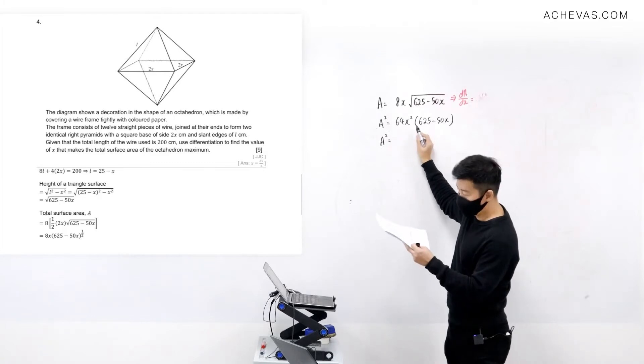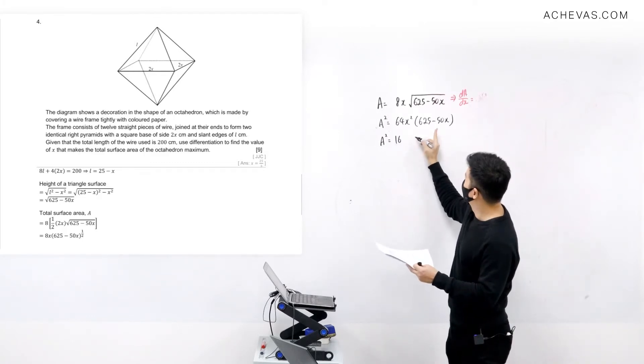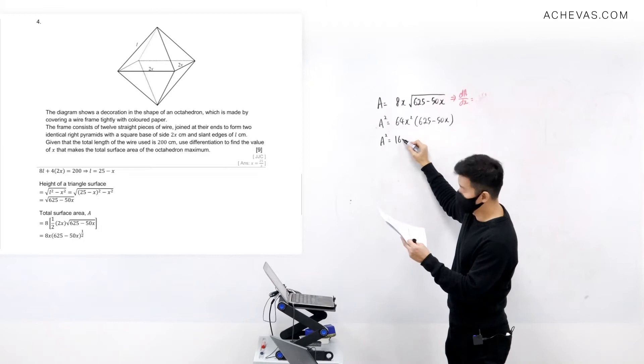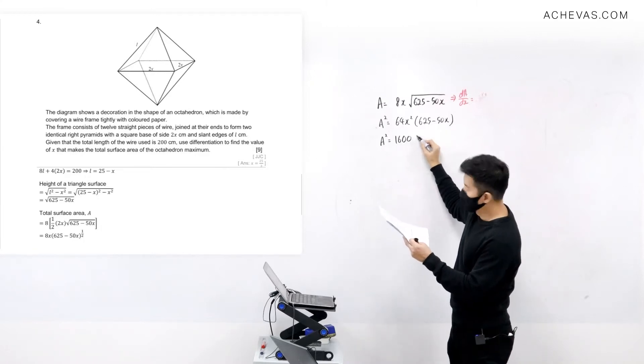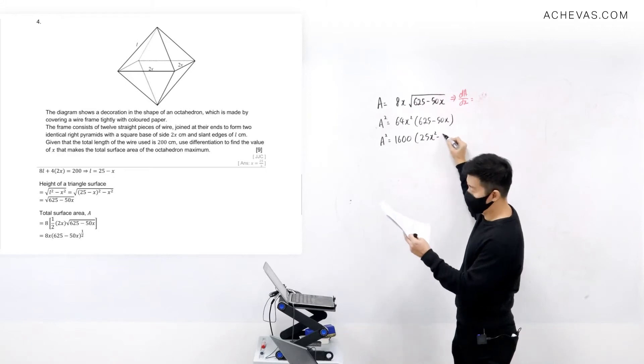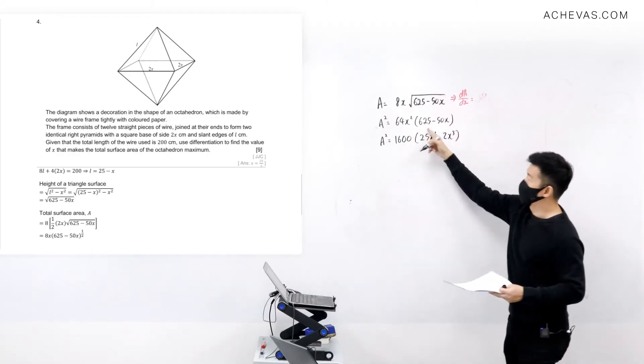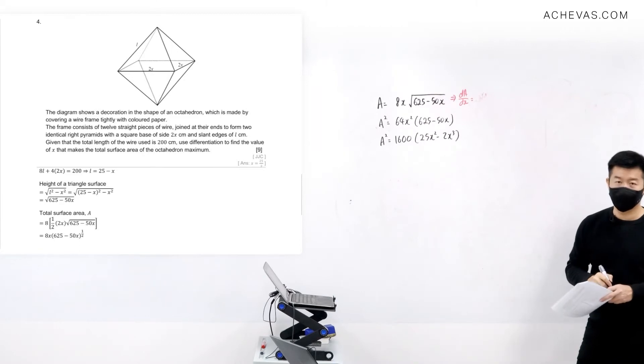So I have A². This is equal to... I can factorize this. I'll factorize 25 out, so this will give me 1600, and this will be 25x² - 2x³ if I were to multiply x² in.